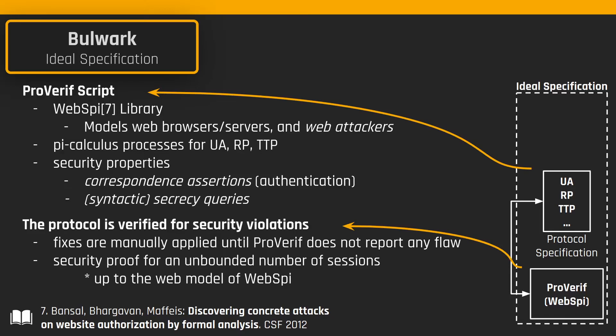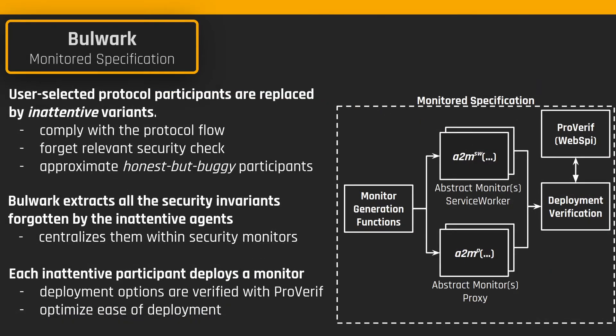Once verification is complete, the TTP can use Bulwark to generate security monitors for both the RP and its own implementation. In this phase, Bulwark relaxes the assumption that all protocol participants are implemented correctly. In particular, user-selected participants are replaced by their inattentive variant. This inattentive variant complies with the protocol flow but forgets relevant security checks. This approximates honest but buggy participants, which are interoperable with the other parties but whose requests and responses are a superset of the original ones. Bulwark then extracts from the ideal specification all the security checks forgotten by the inattentive participants and centralizes them within security monitors. This is done by applying two functions, A2M-P and A2M-SW, which derive from the ideal specification process an abstract server-side proxy or an abstract service worker. In the monitored specification, each inattentive participant deploys a monitor at both the client and server side.